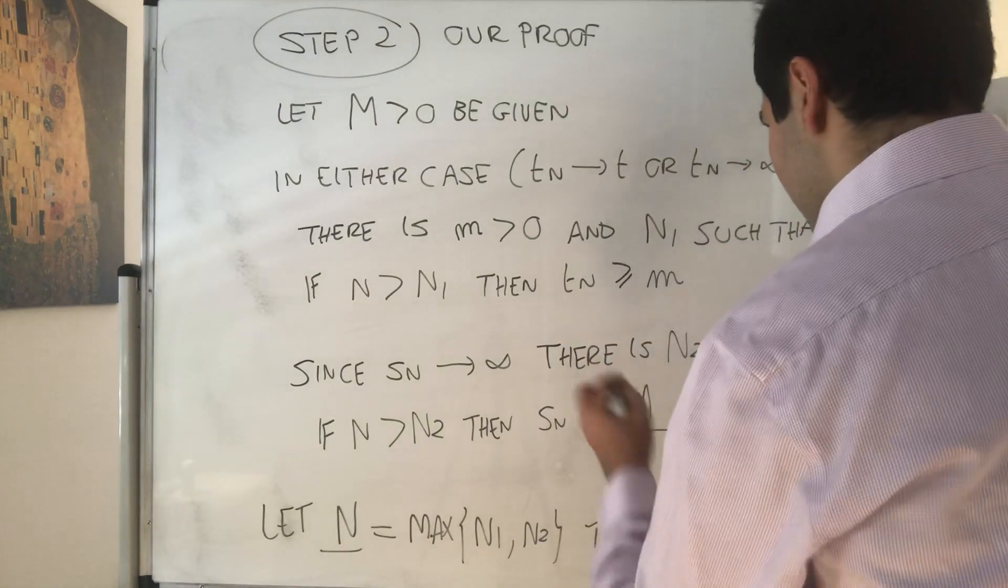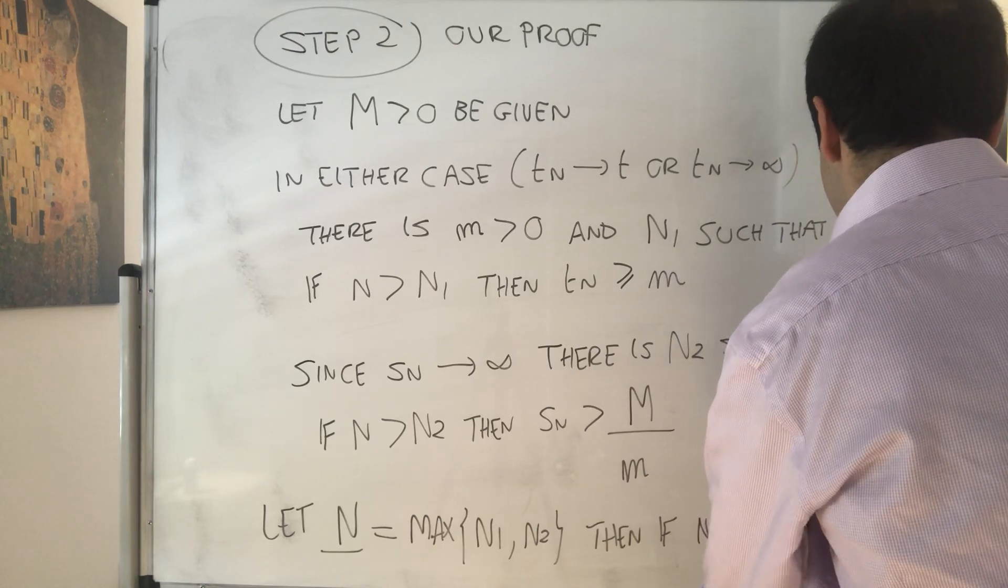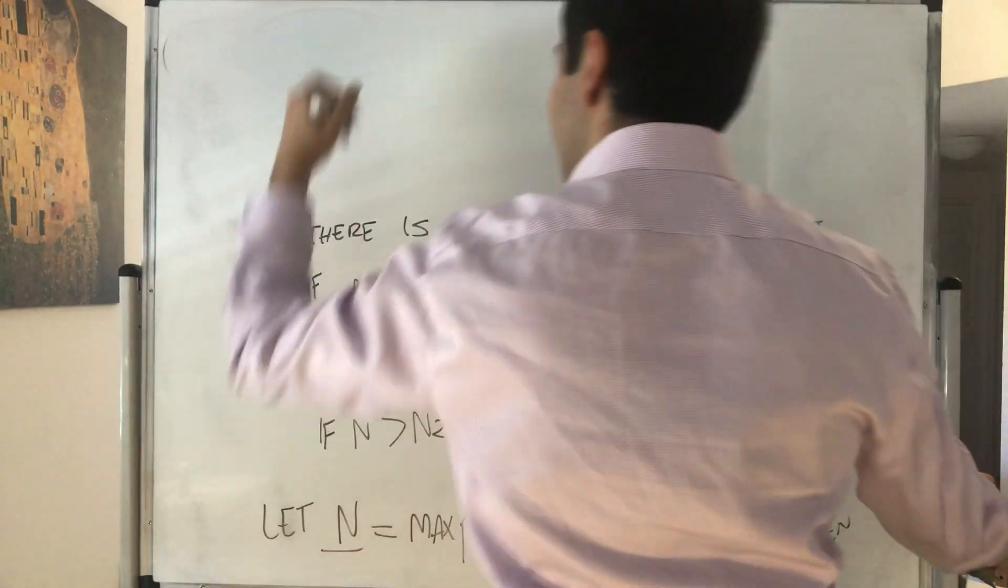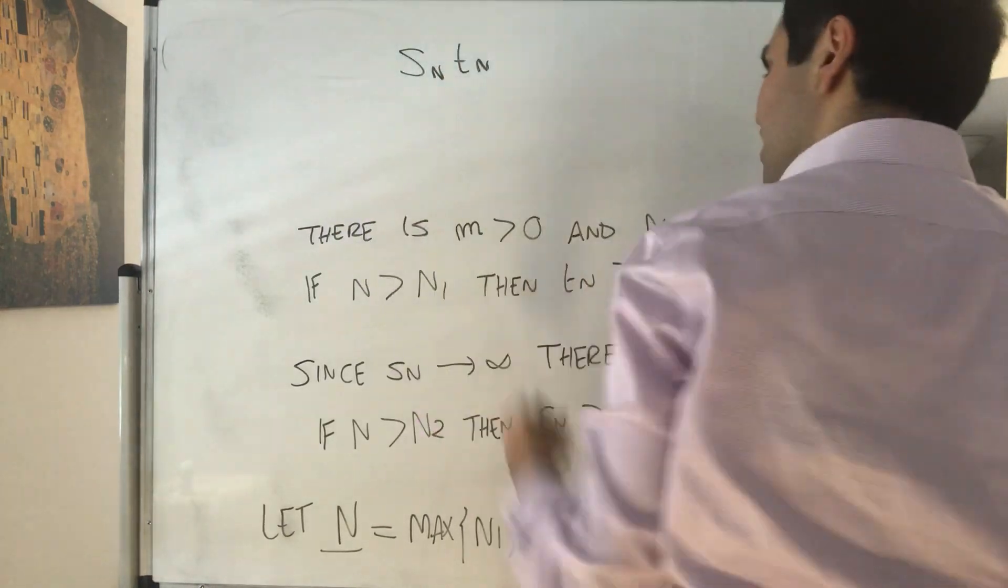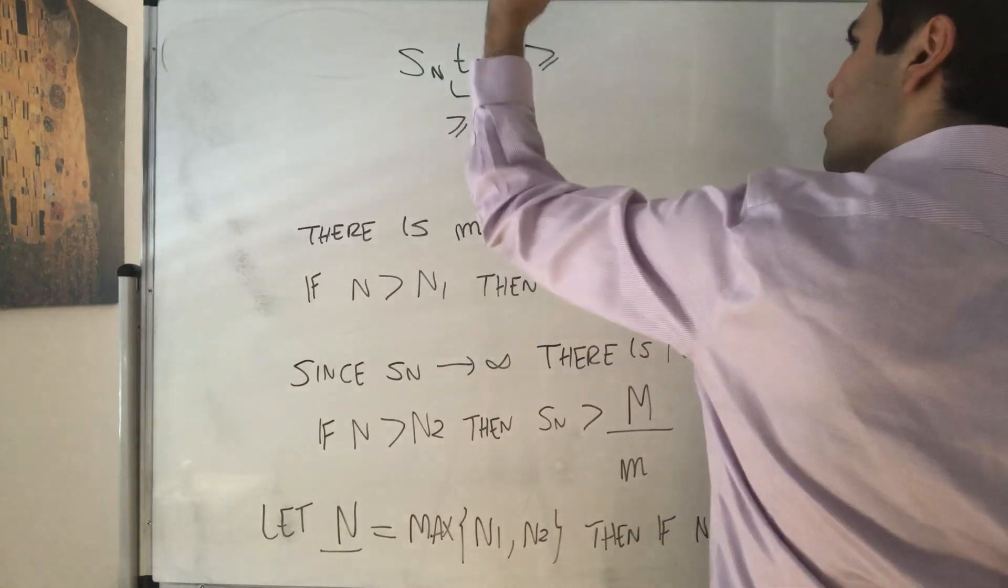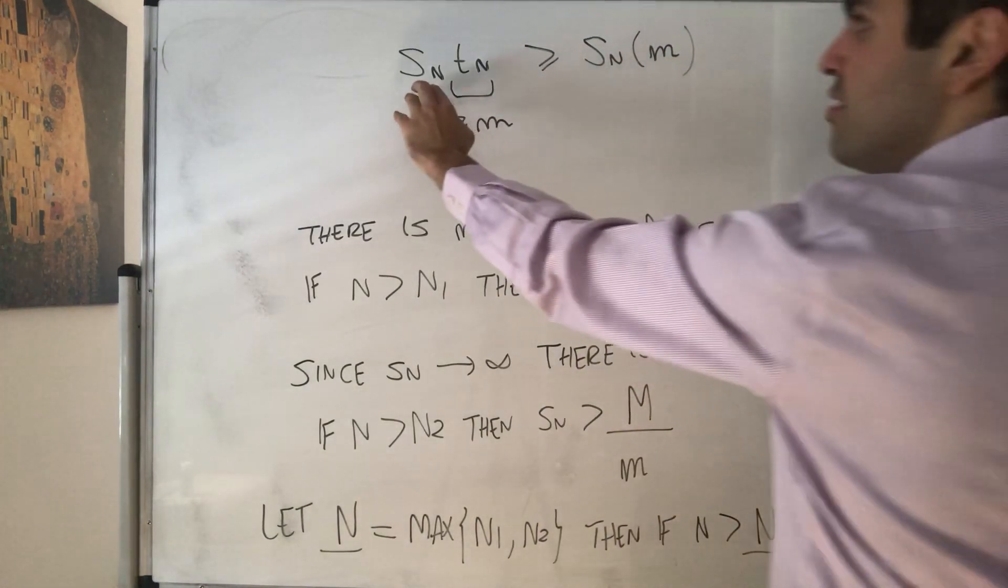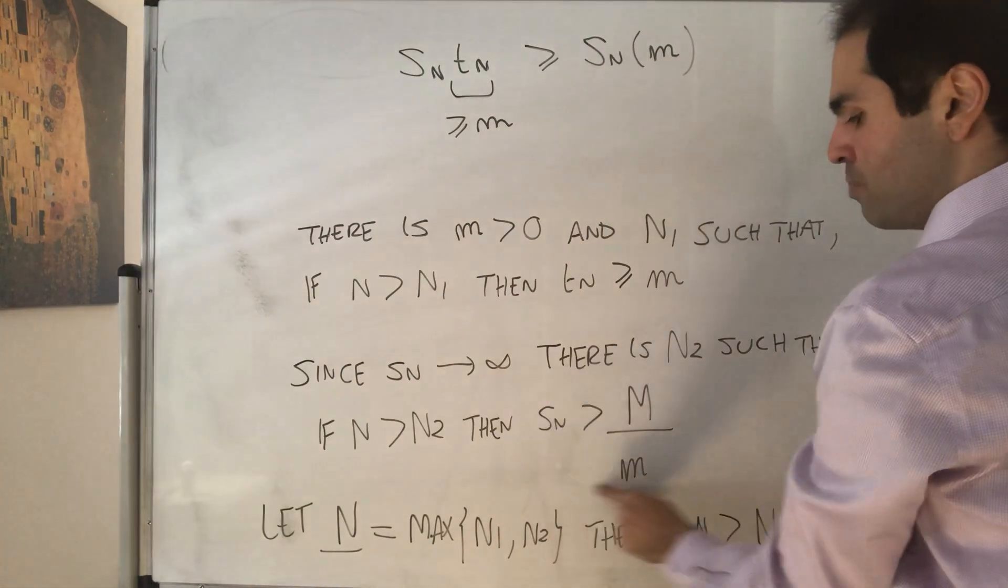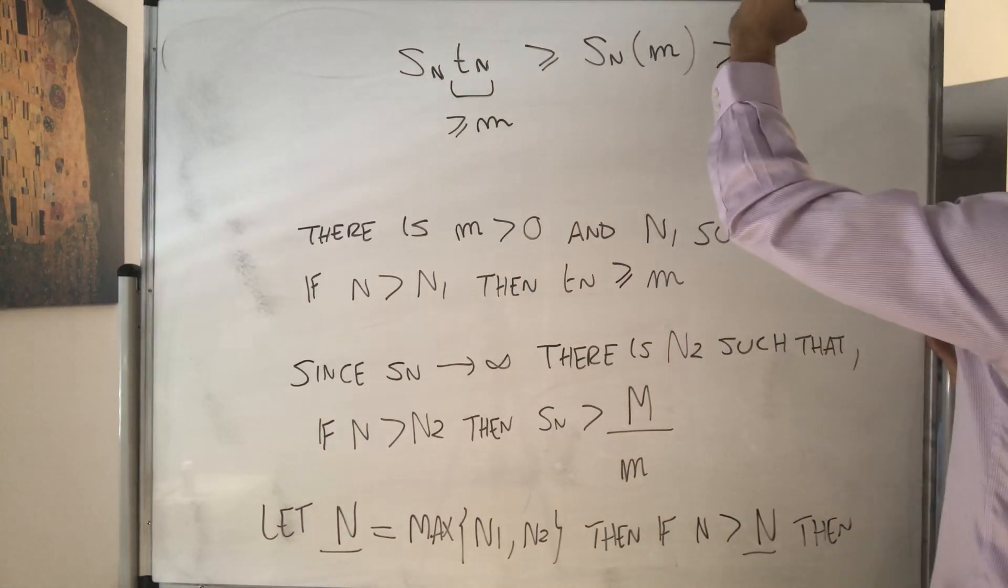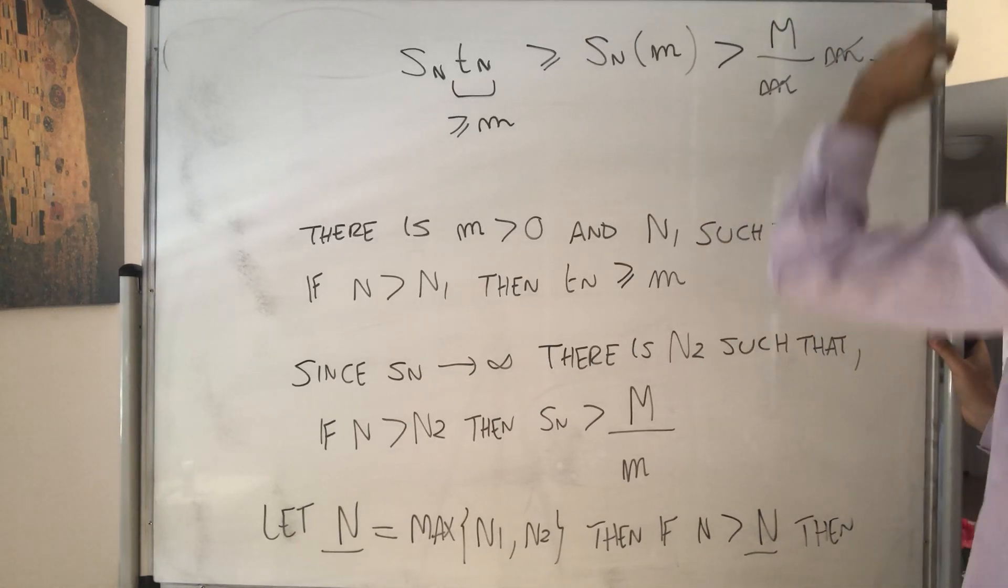Then, if n is bigger than capital N, then what do we have? Well, the stuff we want, so Sn Tn, well, because Tn is greater or equal to m, this becomes greater or equal to Sn times m. And by the way, here we implicitly use the fact that Sn is positive, but we know it's positive, because Sn is bigger than that positive constant, and then that becomes strictly greater than M over m times m, and that is M.